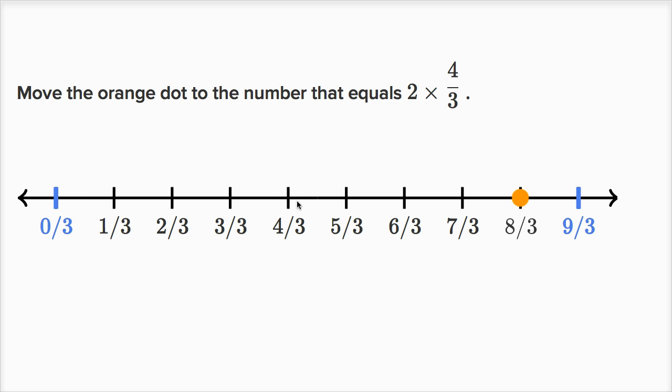So one times four-thirds is just four-thirds, and then two times four-thirds is eight-thirds. And notice, that's the same thing as two times four, which is eight, over three, eight-thirds. Let's do one more of these.